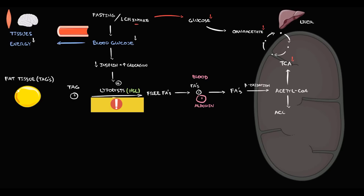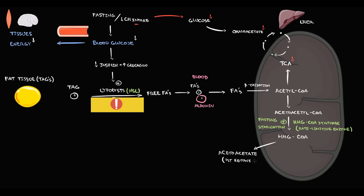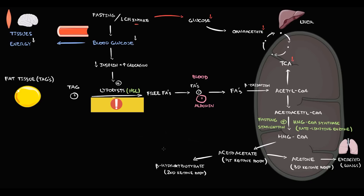This is when the liver begins to produce ketone bodies. Initially, acetyl-CoA is converted to acetoacetyl-CoA. A rate-limiting enzyme called HMG-CoA synthase then converts acetoacetyl-CoA to HMG-CoA — its activity dramatically increases during fasting and starvation. From HMG-CoA, the liver produces acetoacetate, the first ketone body. From acetoacetate, we can produce beta-hydroxybutyrate, or by decarboxylation, acetone — a useless ketone body excreted through the lungs, which can cause a fruity odor in some people.